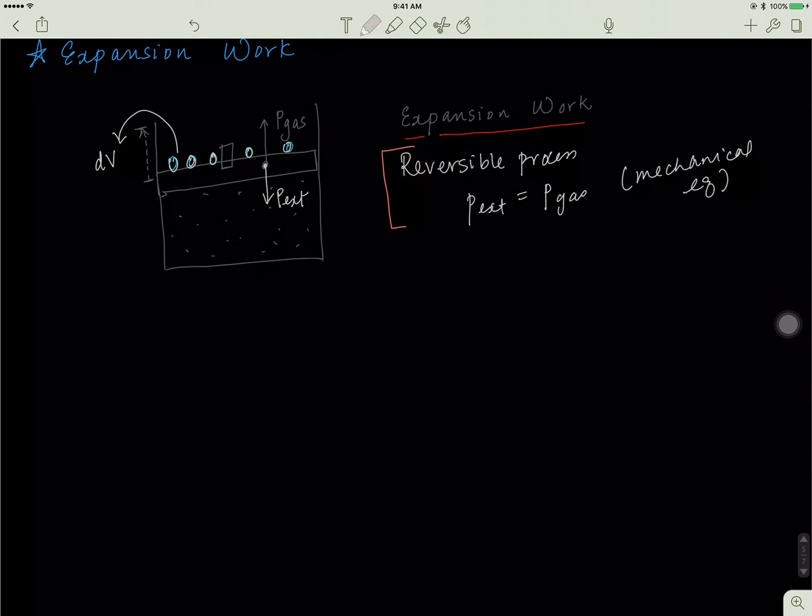So what we want to learn is the expansion work. The expansion work is equal to negative p external delta V. What that means is that the work done in the expansion work is equal to the external pressure, in this reversible process, times this change in volume delta V. Let's say your piston moved up until this final position V_f from V_i. The change is what we're interested in. If you multiply this change in volume with the pressure of the gas, you essentially find out the work being done.